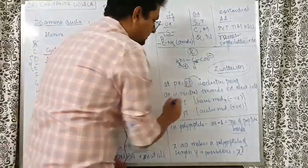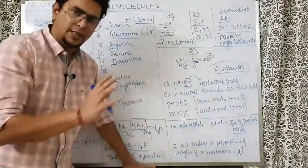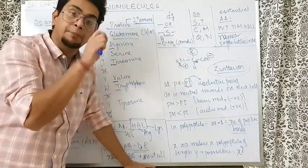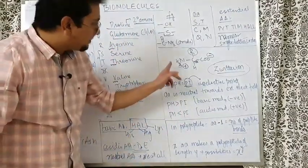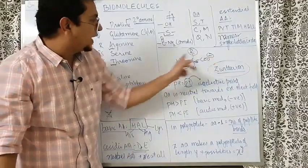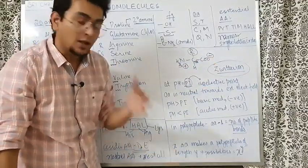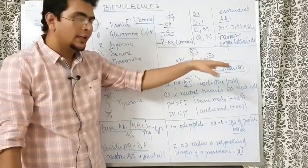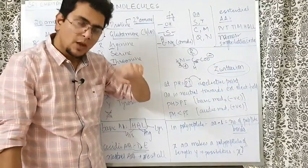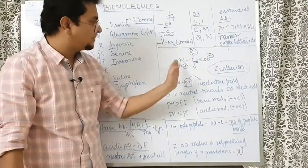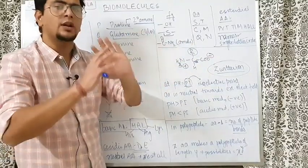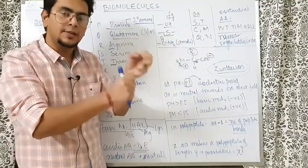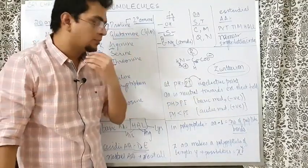There is a pH called pI — the isoelectric point. The isoelectric point is the pH at which the positive and negative parts are equal in the amino acid. Otherwise, sometimes the positive is more, sometimes the negative is more. When the NH3+ and COO- concentrations are equal in the medium, that pH is called the isoelectric point.